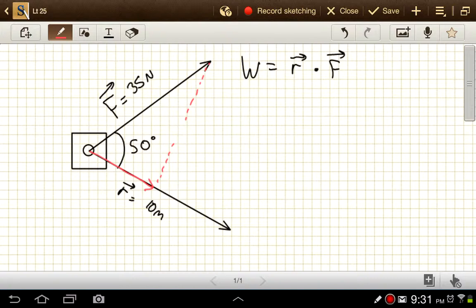And so the work or the dot product of these two vectors is going to have a value that's equal to the magnitude of that little red arrow that I've drawn in there.